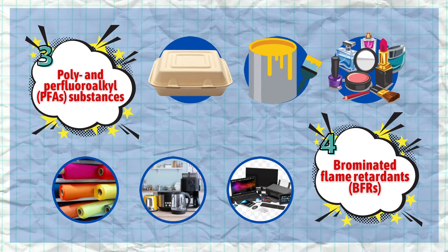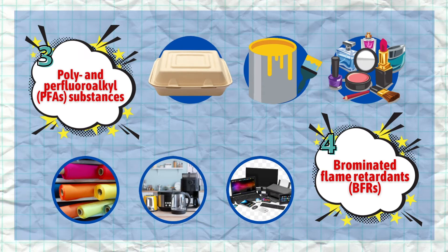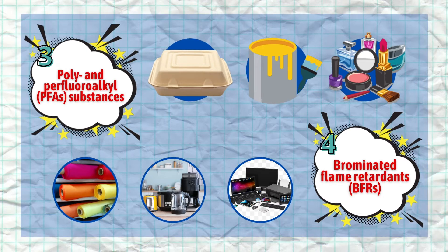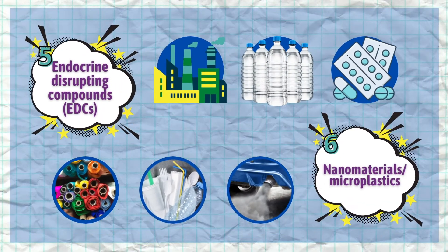BFRs, on the other hand, are mixes of man-made chemicals that are added to a wide variety of products to make them less flammable, which include textiles, electric, and electronic equipment. Next is EDCs, which are substances that interfere with the normal function of your body's endocrine system, and are mostly found in plastics, industrial ingredients, and pharmaceutical agents.